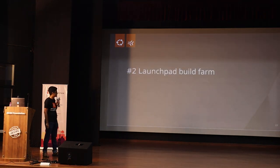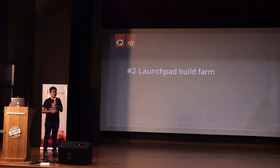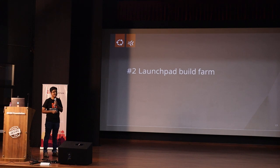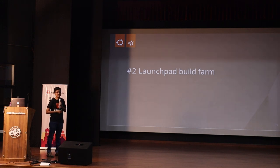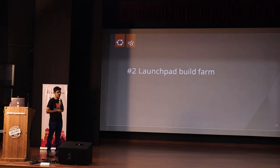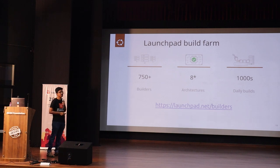The next thing I want to talk about is the Launchpad build farm. To make Ubuntu possible, we need to build tens of thousands of Ubuntu packages on multiple architectures — AMD64 for Intel and AMD platforms, and ARM which is used in phones, recent MacBooks with M1, M2, and M3 chips. Launchpad's build farm provides that infrastructure. It has over 750 builders and the list is growing, currently supporting 8 architectures with thousands — likely tens of thousands — of daily builds.